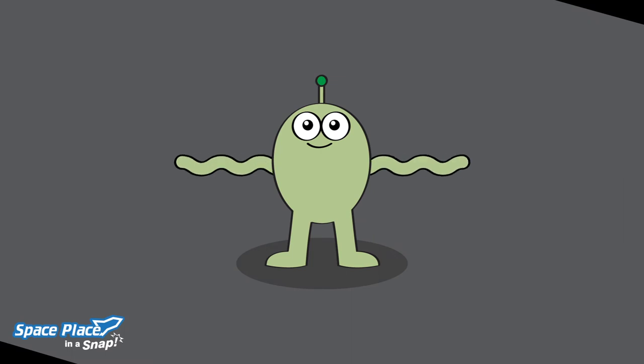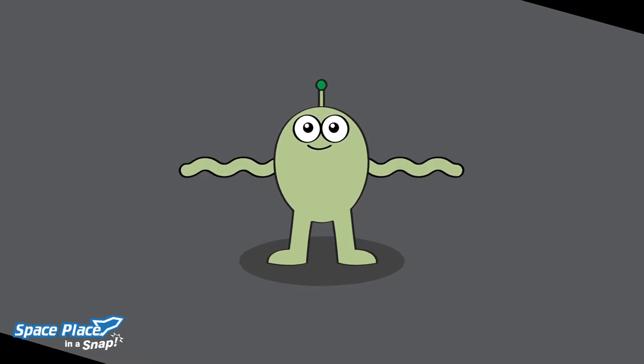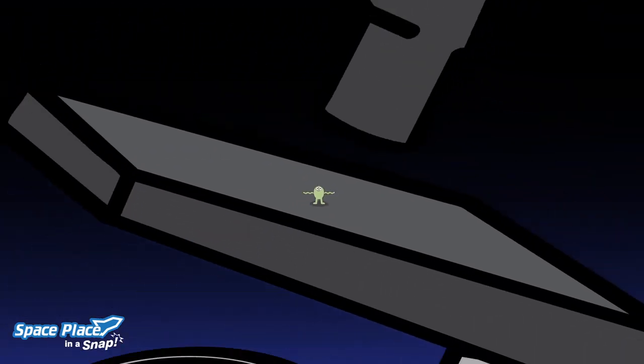We don't know what living things on other planets would look like. And they might be so small, they could only be seen with a microscope.